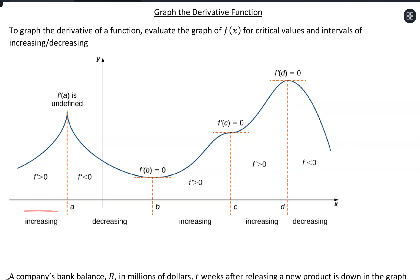What we can also do is think about intervals using our first derivative test — where are we increasing and where are we decreasing. We would just be reading left to right. So seeing that we're increasing, that's where our first derivative would be greater than zero. And then decreasing, our derivative is less than zero. Increasing — more than zero. Decreasing — less than zero.